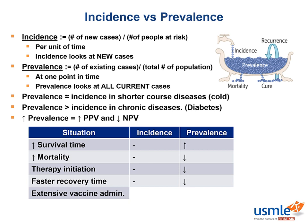Extensive vaccine administration? Here we are going to see a drop in both incidence and prevalence. If we are decreasing the number of new cases by preemptively vaccinating a population, then we are also going to decrease the total number of existing cases in the population. And finally, decreased risk factors? Again, both incidence and prevalence will drop, because we have a smaller likelihood of new presenting cases, which will lead to a drop in overall cases.